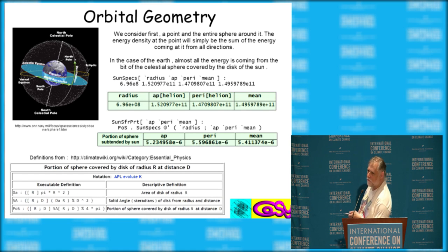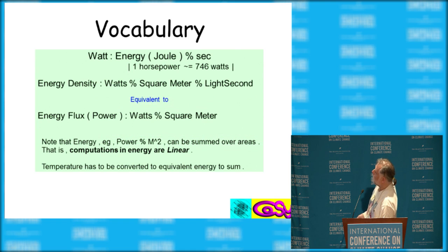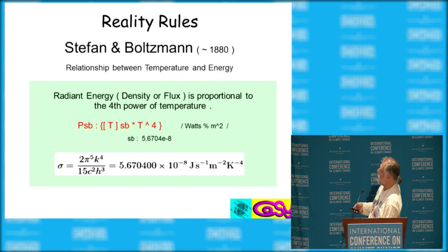That's actually about five millionths of the total sky. You can either talk in terms of watts or in terms of density or flux. But here's the first of the reality rules accounts. Stefan Boltzmann, around 1880, showed, and this is the important thing,